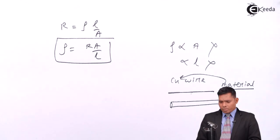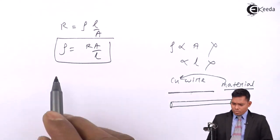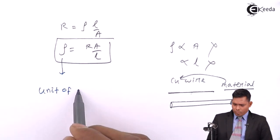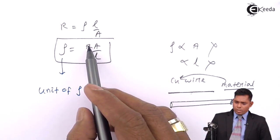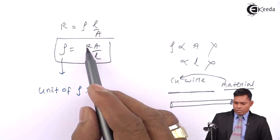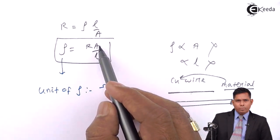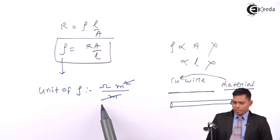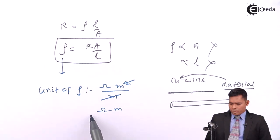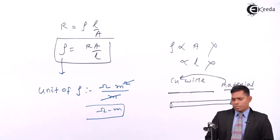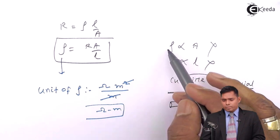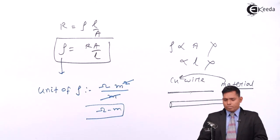As you change the material, the specific resistance will also change. Now, what is the unit of specific resistance? Unit of R is ohm, unit of area of cross-section is meter squared, divided by unit of length which is meter. So the unit of specific resistance is ohm·meter. You should remember that specific resistance is a property of the material, not of the dimensions of the material.